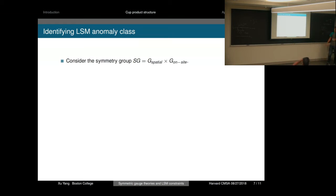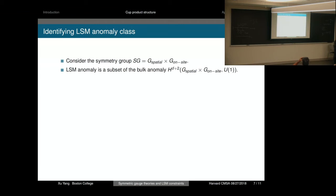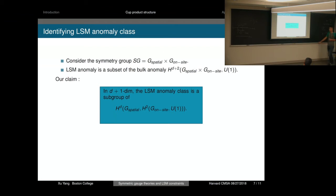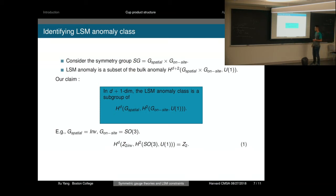The LSM anomaly class is a subclass of the full bulk SPT classification. We will see a simple example to understand it. Suppose we only have inversion symmetry, and the on-site is also inversion symmetry. Then this formula gives the Z2 classification, which tells whether the inversion center has integer spin or half-integer spin. It can also be probed using the decorated domain wall construction.